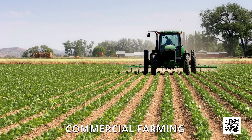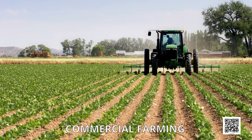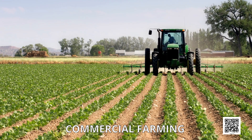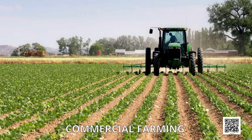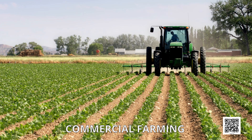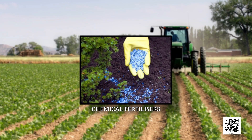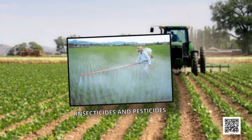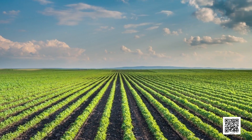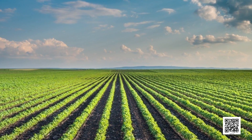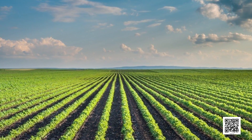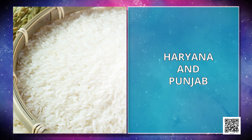Now we talk about commercial farming. The main characteristic of this type of farming is the use of higher doses of modern inputs, which are high yielding variety seeds, chemical fertilizers, insecticides and pesticides, in order to obtain higher productivity. The degree of commercialization of agriculture varies from one region to another. For example, rice is a commercial crop in Haryana and Punjab, but in Odisha it is a subsistence crop.